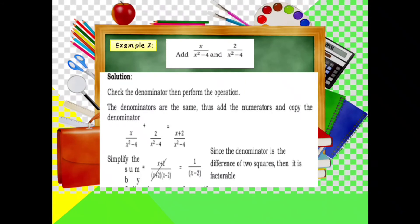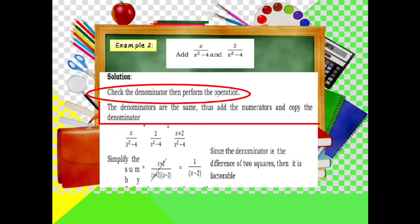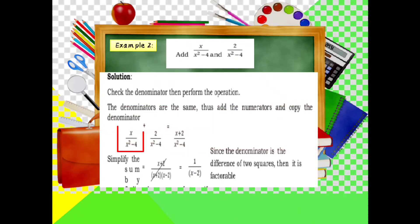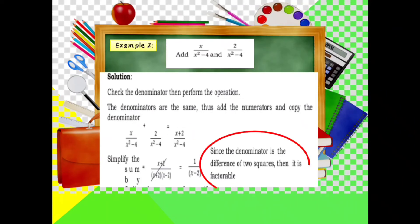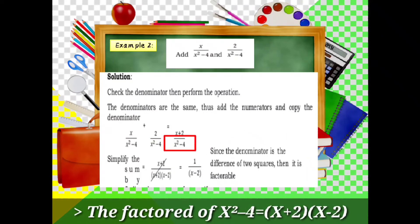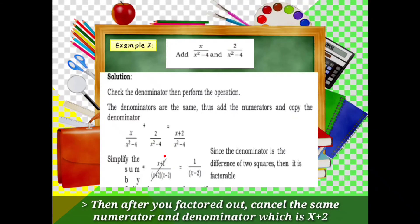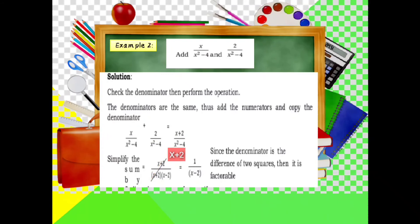Example number 2: Add x over x squared minus 4 and 2 over x squared minus 4. The denominators are the same, so add the numerators and copy the denominator: x plus 2 over x squared minus 4. Since the denominator is a difference of two squares, it is factorable: x squared minus 4 equals x plus 2 times x minus 2. Cancel the common factor x plus 2, leaving a final answer of 1 over x minus 2.